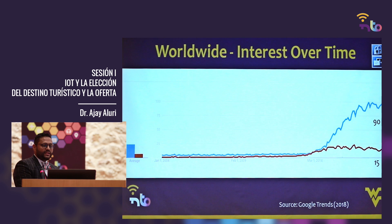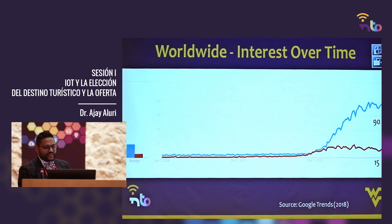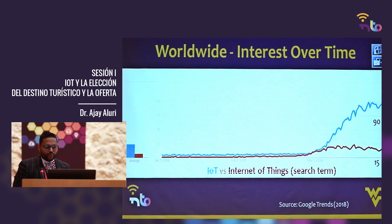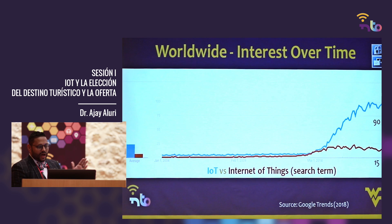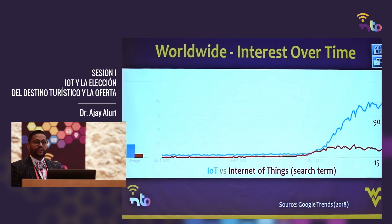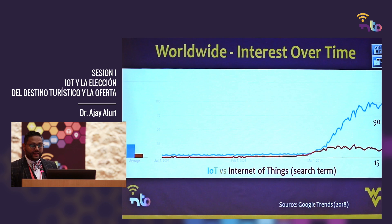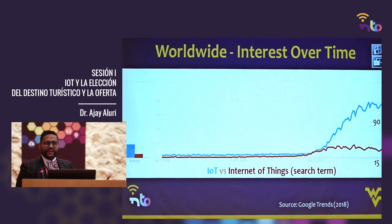Let's look at interest over time. One reason not everybody knows about IoT is people don't know what it means. I did a Google Trends search from 2004 to 2014 — there was nothing going on. The blue color is the 'IoT' search term and the red one is 'Internet of Things.' After 2014, most people started searching for 'IoT' on Google more than 'Internet of Things.' It reached the peak in 2017 and is still at 90% interest across the world.